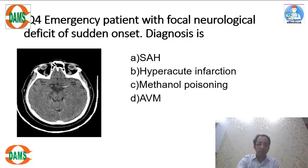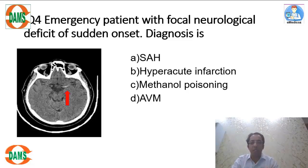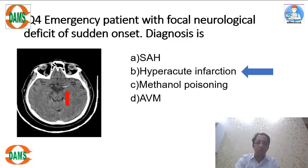The next case is an emergency patient with focal neurological deficit. On CT scan, the arrow-marked structure is the left middle cerebral artery, which appears hyperdense — more white — because there is thrombus inside. As early as 12 hours after onset of stroke, the dense MCA sign can be visible on CT. This is indicative of hyperacute infarction, which is the answer.